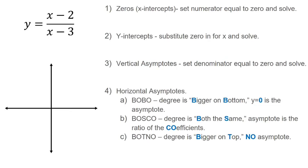So the zeros are the x-intercepts. We're going to set the numerator equal to zero and solve. So I'm going to take the numerator, which is x minus two. I'm going to set it equal to zero, and I'm going to solve. So if I add two to each side, we're going to get that x equals two. That's going to be our zero of this rational function.